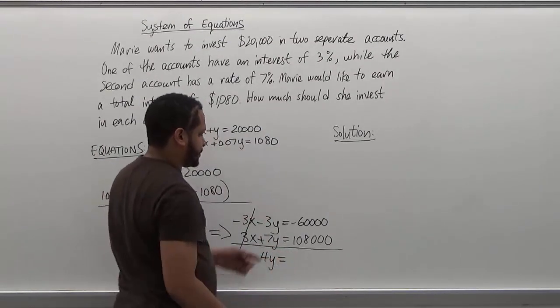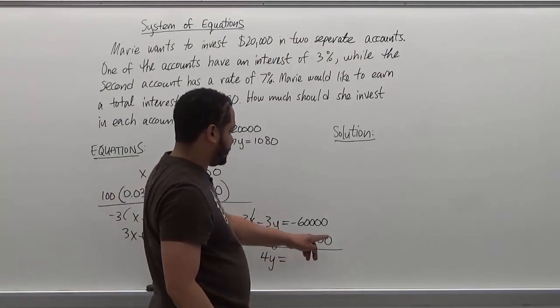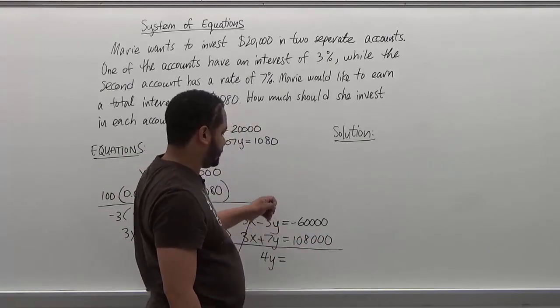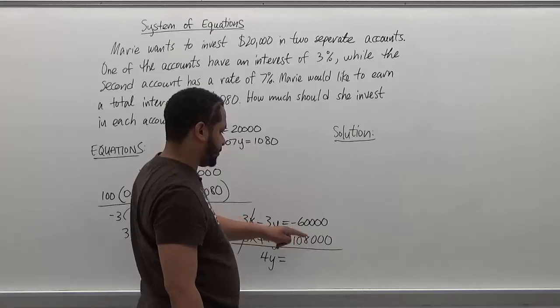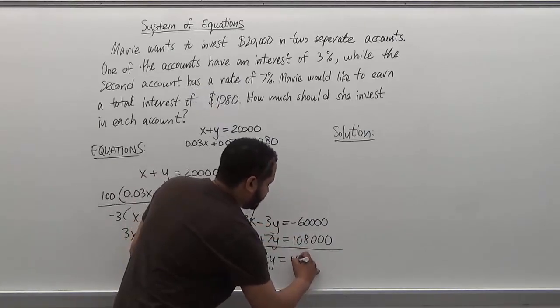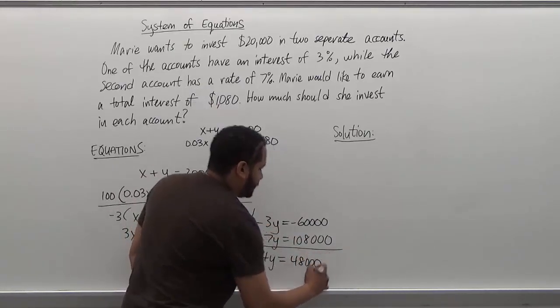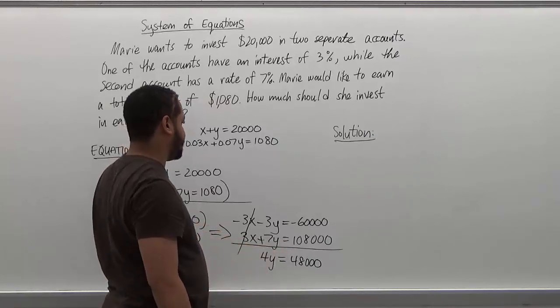Four y's. And here we're subtracting 108,000 being subtracted by 60,000. That's going to leave me with 48,000. If you can't see the subtraction is clear, make sure you use the calculator.